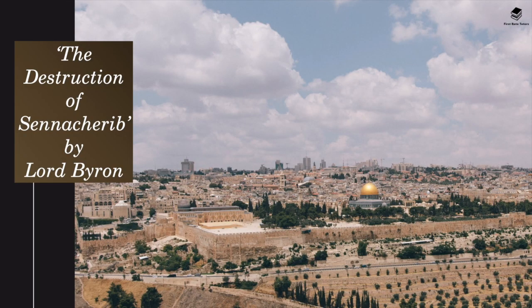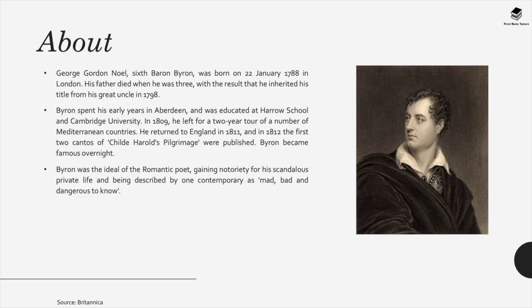The second poem is The Destruction of Sennacherib by Lord Byron. Byron was born in 1788, a contemporary of William Blake. His father died when he was three, and he inherited his title from his great uncle in 1798. He spent his early years in Aberdeen and was educated at Harris Academy and Cambridge University. He was seen as the ideal of the Romantic poet, and gained notoriety for scandalous affairs. Many described him as 'mad, bad and dangerous to know.'